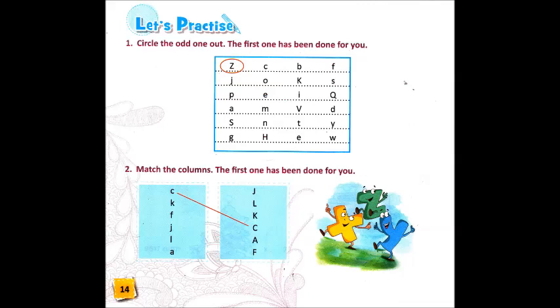Okay children, now your first exercise is from your book page number 14. The first question is circle the odd one out. The first one has been done for you. Like in the first one, see it is written Z, C, B and F. Can you see this?